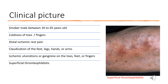Superficial thrombophlebitis is a very important sign in Buerger's Disease — it is inflammatory thrombophlebitis of the superficial veins in the lower extremities, found in 50% of patients. This sign is important because it is absent in other types of vasculitis.